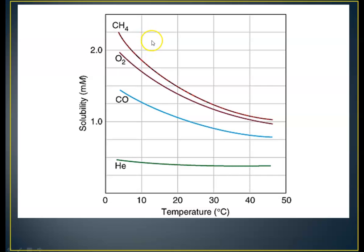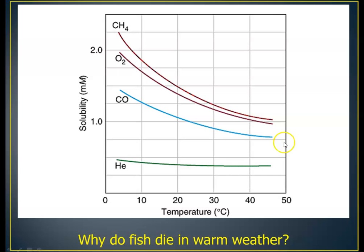For gases dissolved in a liquid, the solubility of something like oxygen starts at almost 2 millimoles per liter of solution, and as the temperature increases, solubility drops to about 1 — we lose about half the solubility. That raises the question: why do fish die in warm water? In warm weather, the temperature of the water increases, the dissolved oxygen decreases in solubility, and more fish can die.